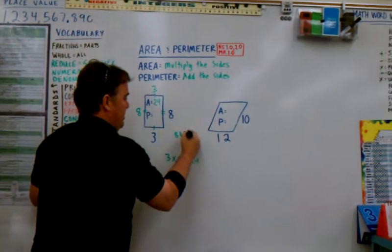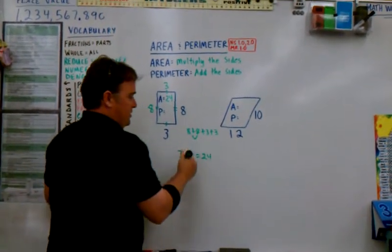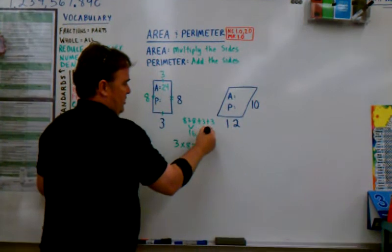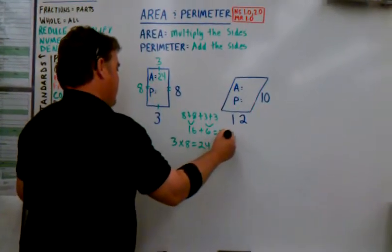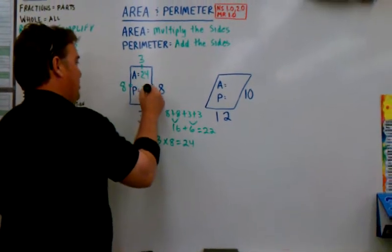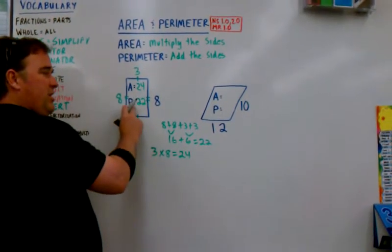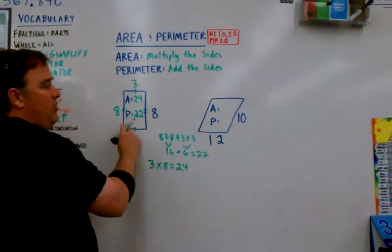Eight plus eight plus three plus three. Eight and eight is sixteen. And three and three is six. Sixteen plus six is twenty-two. Very good. Let's put the twenty-two by the P. Now, the P was what again? Perimeter.